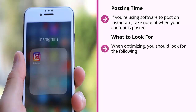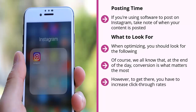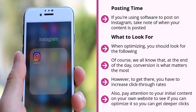When optimizing, look for the following indicators of success: increased click-through rate, increased dwell time, deeper clicks inside your website, and better conversion rates. Ultimately, conversion is what matters most — it's the only thing that matters, because conversions put dollars in your pocket. However, to get there, you have to increase click-through rates, optimize your landing page to maximize dwell time, and pay attention to your initial website content so you can get deeper clicks. The more internal pages a person views, the more interested they are in what you have to offer. If you take care of all of these on an element-by-element basis, you can increase your conversion rates.